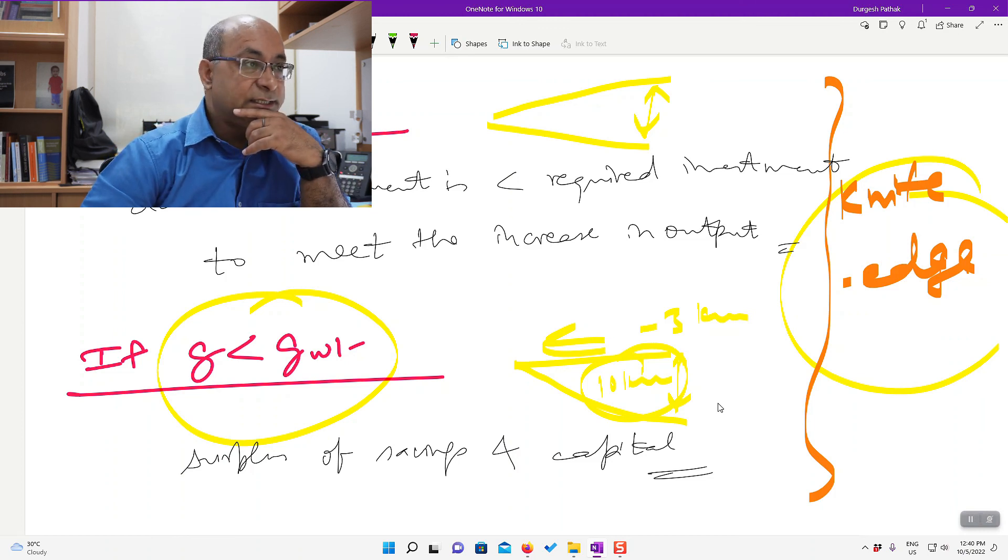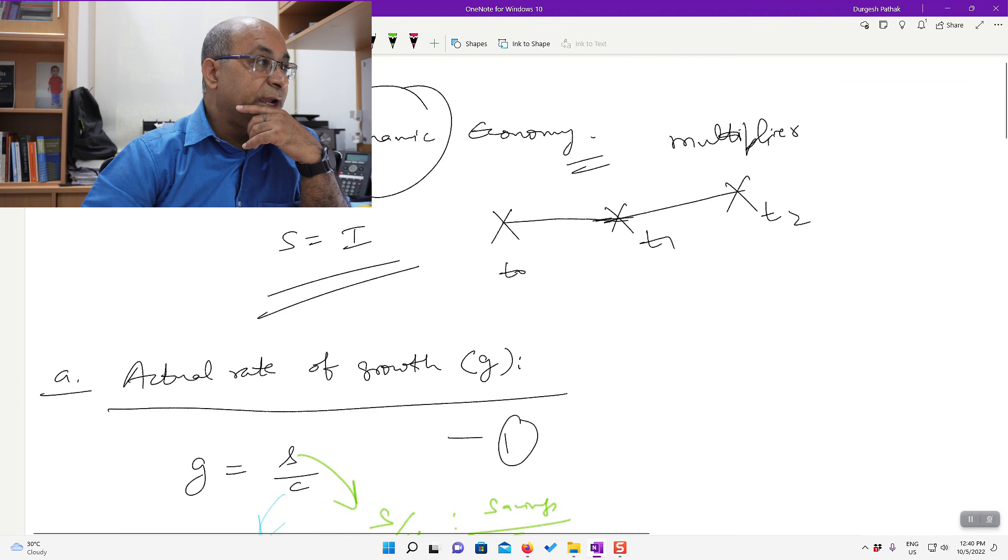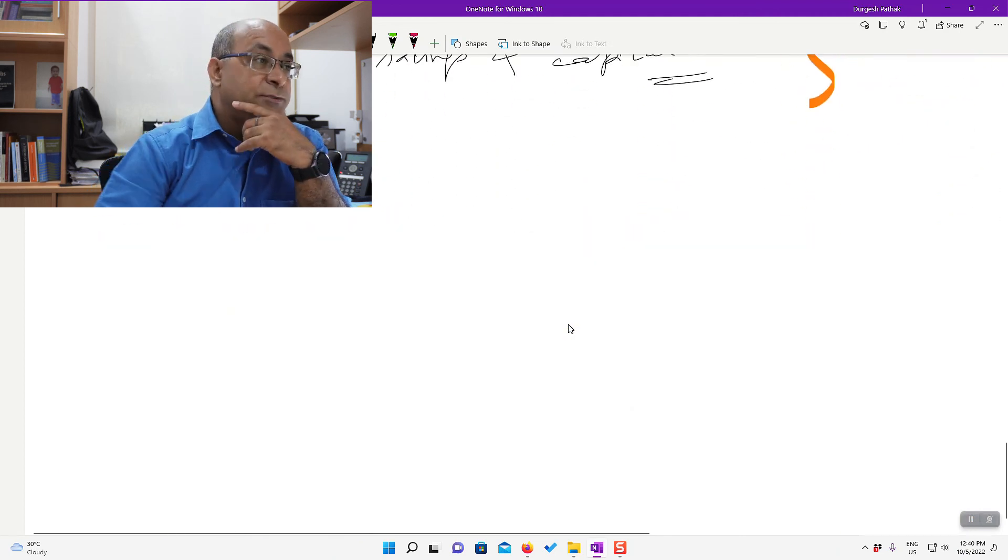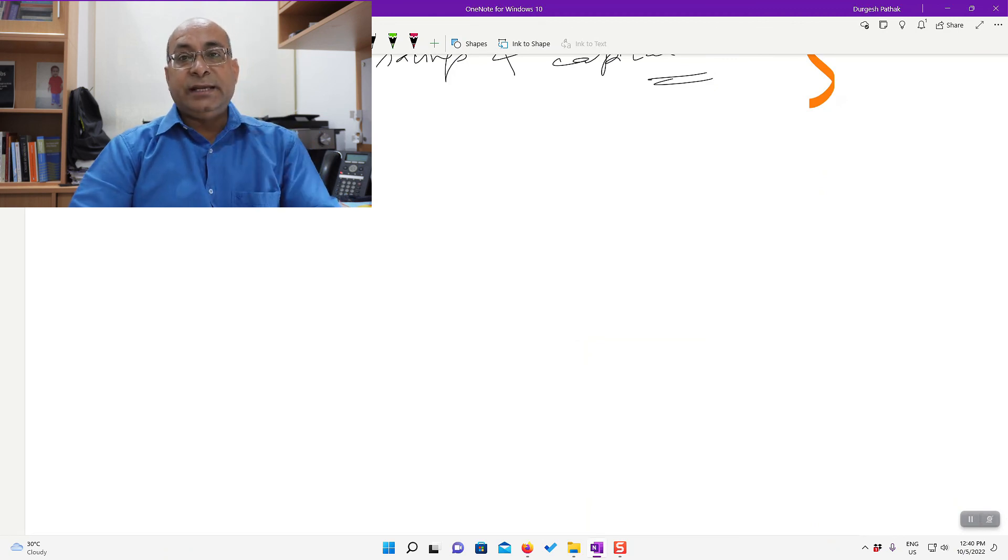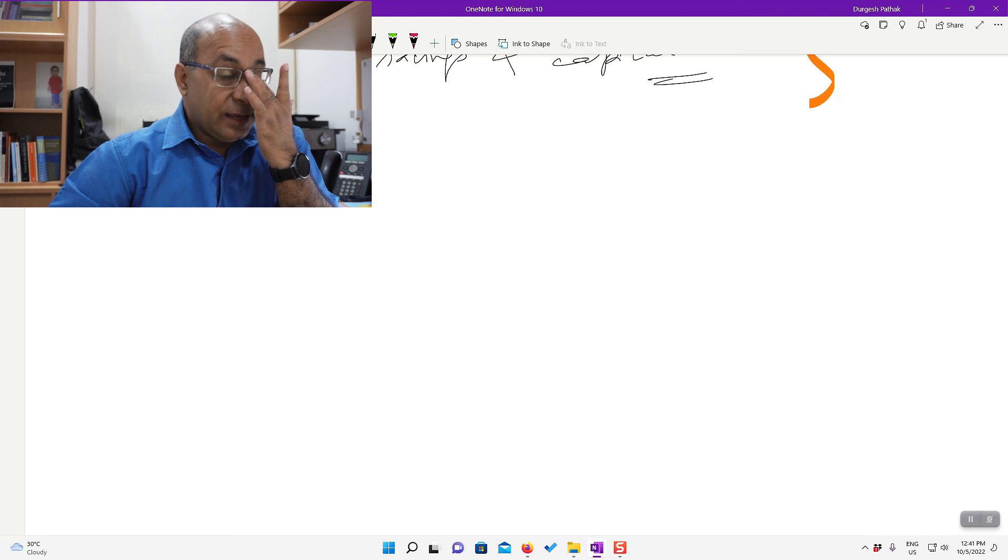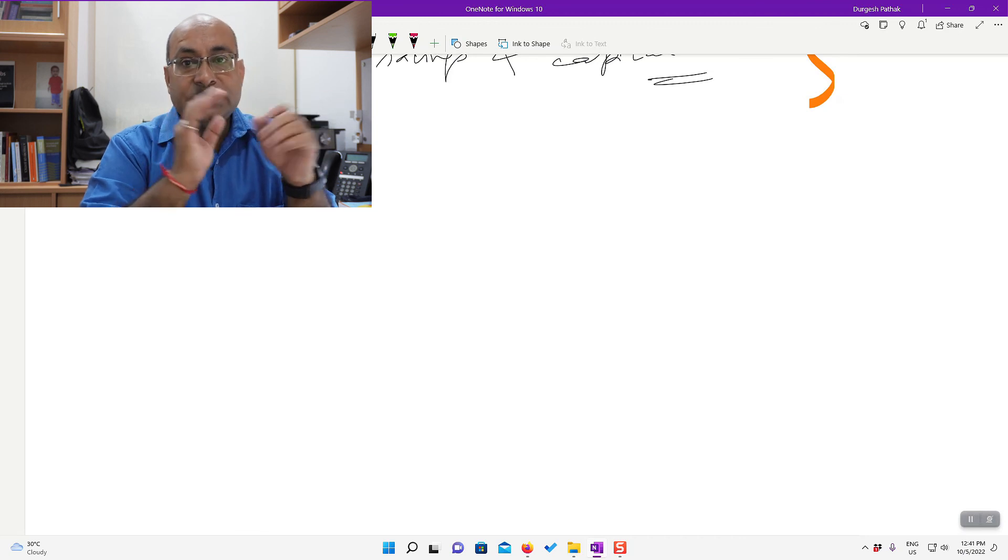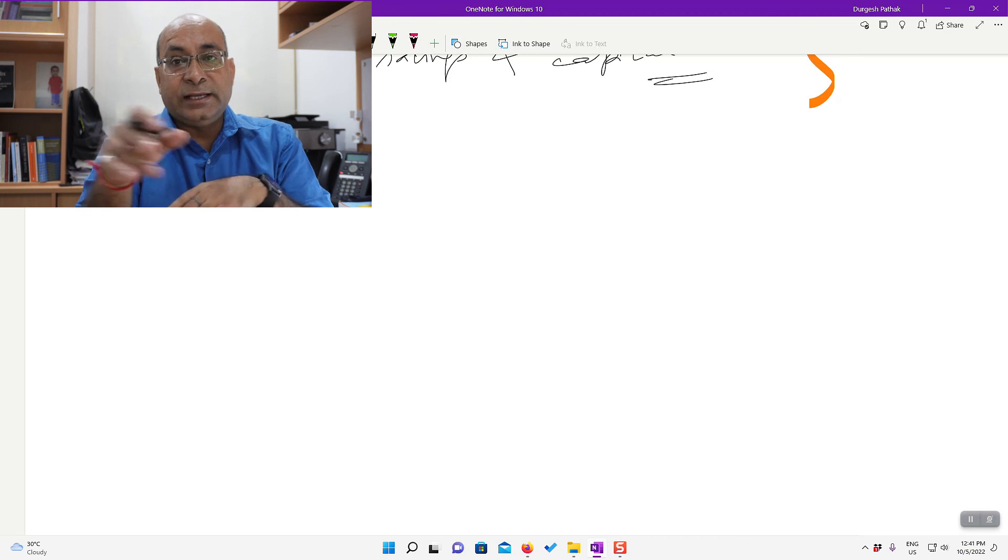We will talk about that in one minute. Just let me introduce you to Domar model, because I said this is Harrod-Domar model and till now I have not discussed at all about Domar. So F. C. Domar was writing separately, I think hundreds of kilometers away from Harrod, without knowing that Harrod is also working on this thing, and came with a model. Though she asked slightly different questions, their conclusions are similar. So I will show you how we can derive Harrod's result from the Domar model.